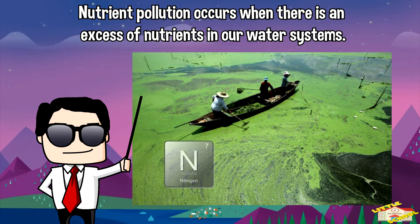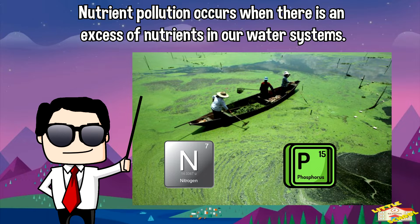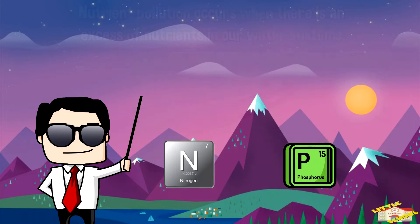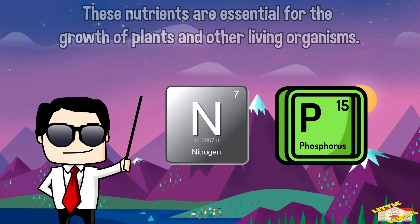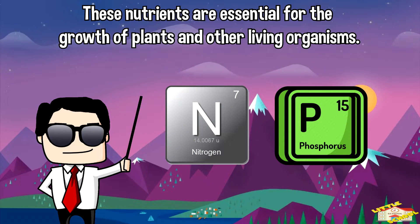Nutrient pollution occurs when there is an excess of nutrients like nitrogen and phosphorus in our water systems. These nutrients are essential for the growth of plants and other living organisms.